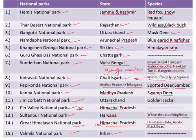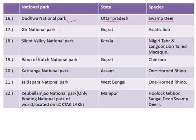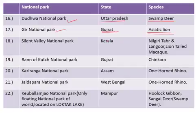Dudhwa National Park is in the state of Uttar Pradesh and is famous for the swamp deer. Next is the Gir National Park, situated in the state of Gujarat, famous for the Asiatic lion — known in Hindi as 'babbar sher'.